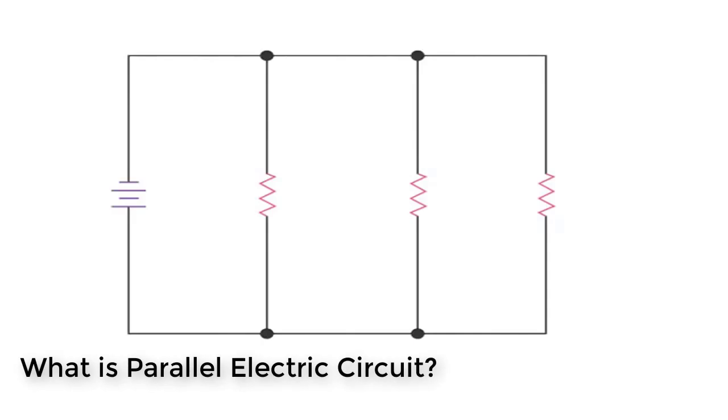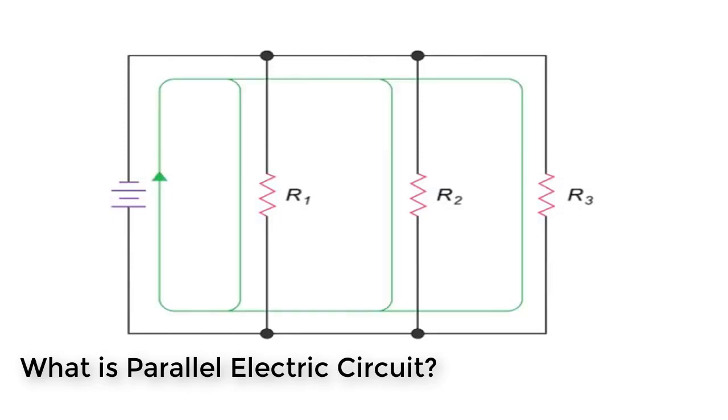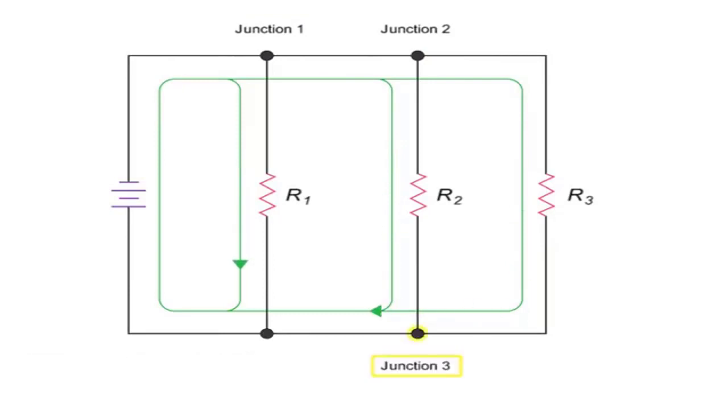The second basic circuit form is known as the parallel circuit. Like a series circuit, the parallel circuit has multiple components or loads. However, in a parallel circuit, the current has multiple paths along which to travel. Each of these paths is known as a branch.